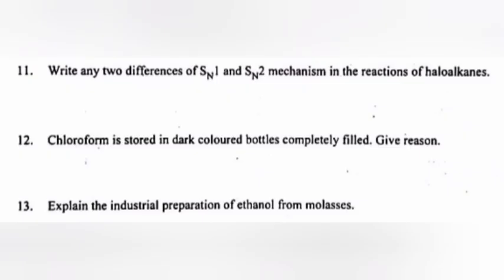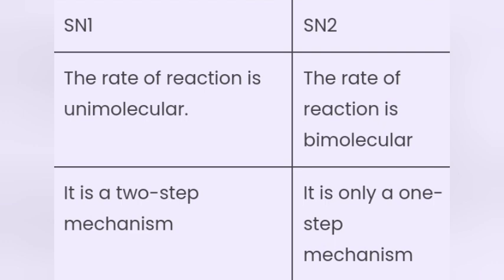Question 11: Write any two differences between SN1 and SN2 mechanisms in the reaction of haloalkanes. Answer: SN1 — the rate of reaction is unimolecular; SN2 — the rate of reaction is bimolecular. SN1 follows a two-step mechanism; SN2 follows a one-step mechanism.